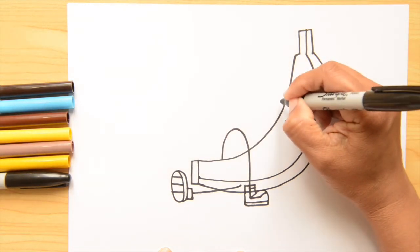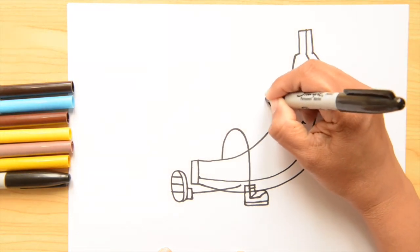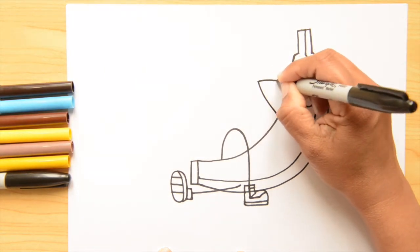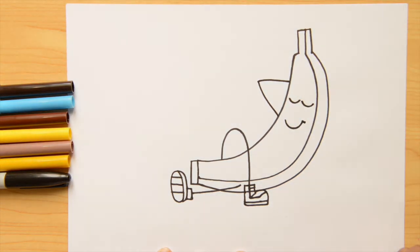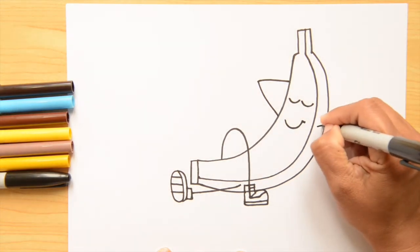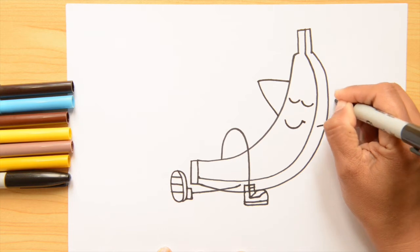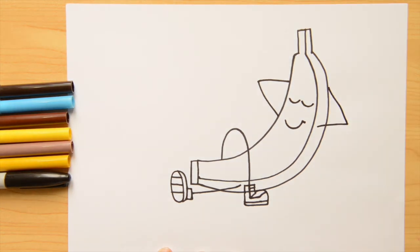So for arms I'm doing kind of like a triangle shape, and we're gonna pretend the hands are behind his head. Now let's do another triangle right here and it goes in the back. And then that's it, we're finished. And now my favorite part, let's color.